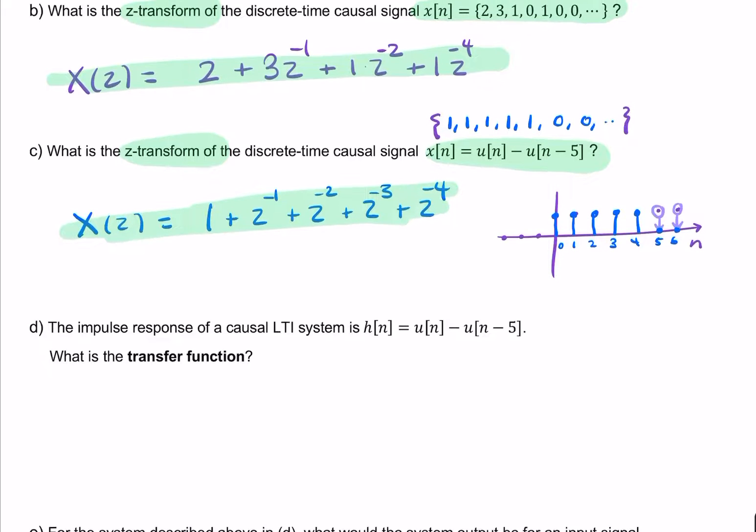Part d is slightly different. This time we're given the impulse response, which looks just like that. It's two unit steps. And we're asked for the transfer function. So remember, the transfer function is just h of z. And that's just the z-transform of h of n. We've already found that. We found it right there.